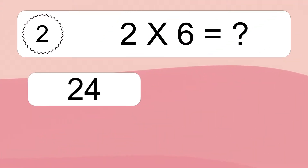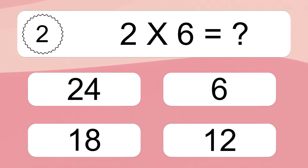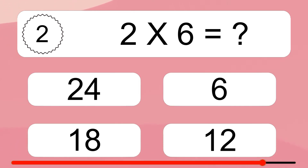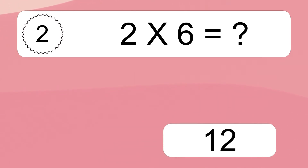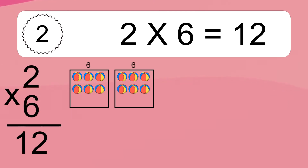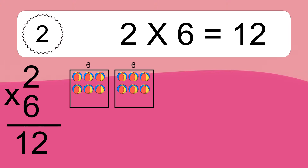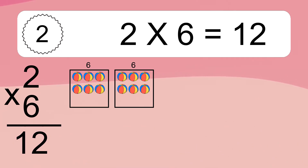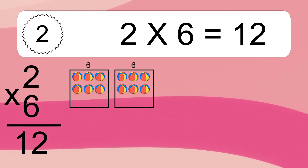Two times six equals what? Two times six equals twelve. We have two boxes and each box has six colorful balls inside. If you count all the balls in all the boxes together, you will have two times six balls. This equals twelve balls.